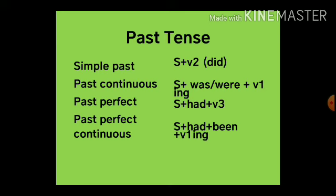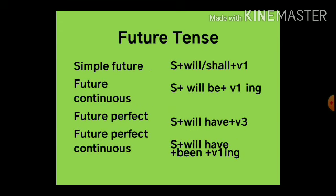Past tenses: Simple past tense — subject plus V2 (second form of verb). The hidden helping verb is 'did,' so V2 separates into did plus V1 for interrogative and negative sentences. Past continuous tense: subject plus was/were plus V1 plus ing — 'was' with singular, 'were' with plural. Past perfect tense: subject plus had plus V3. Past perfect continuous tense: subject plus had plus been plus V1 plus ing.